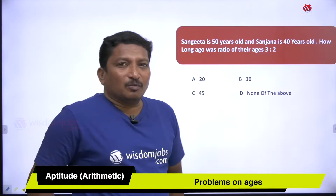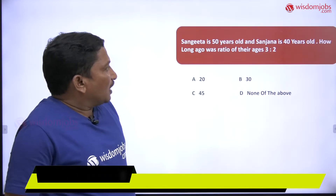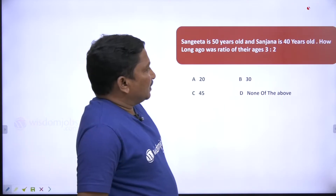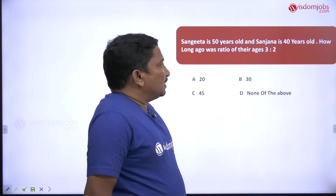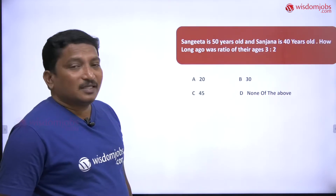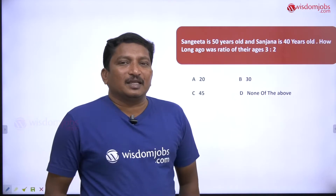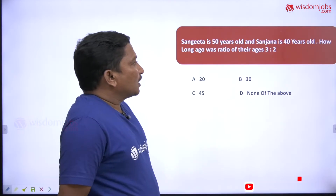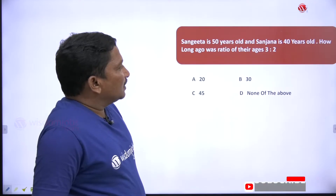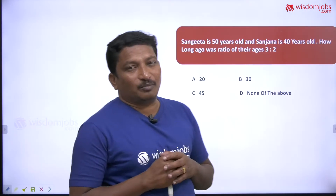The question is: Sangeeta is 50 years old and Sanjana is 40 years old. How long ago was the ratio of their ages 3 is to 2? This is a very good question from an exam point of view.